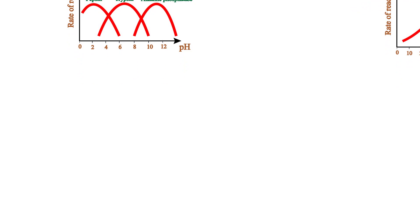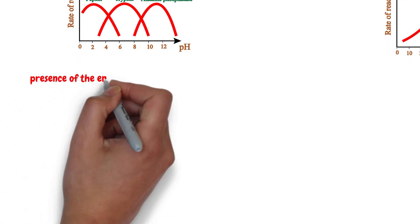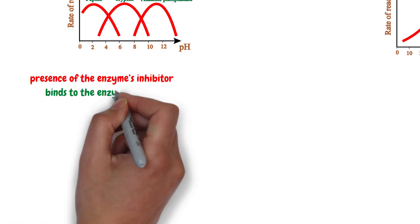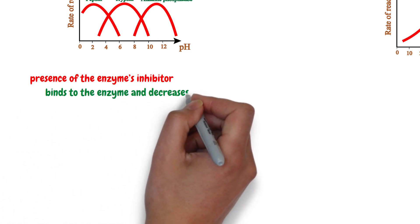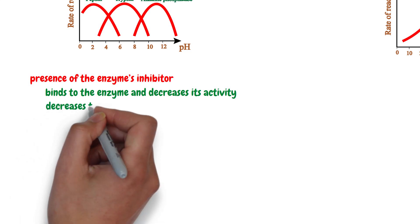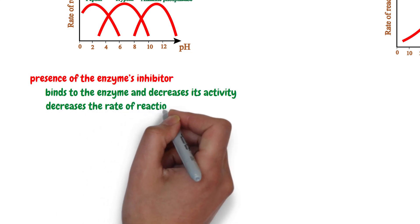The fifth and last factor is the presence of enzyme inhibitors. An enzyme inhibitor is a substance that binds to the enzyme and decreases its activity. The presence of an enzyme inhibitor decreases the enzyme's activity and, thus, decreases the rate of reaction.